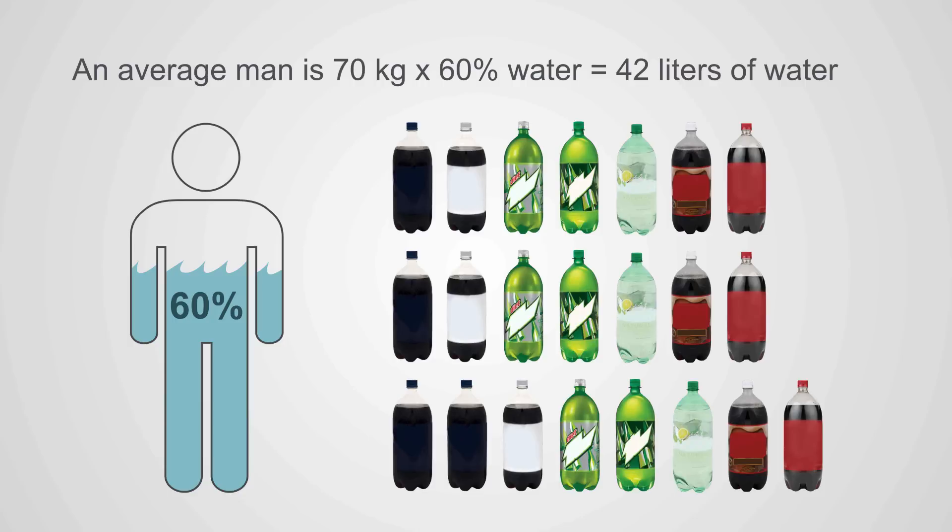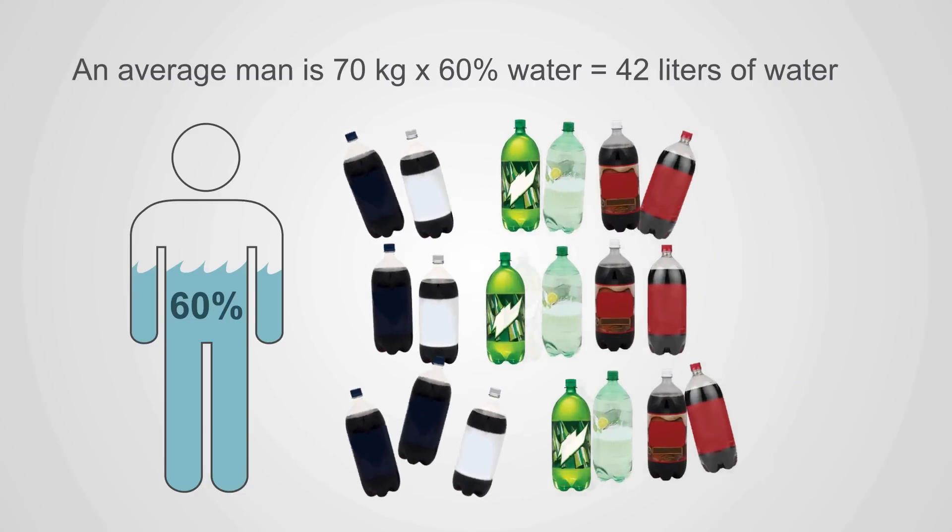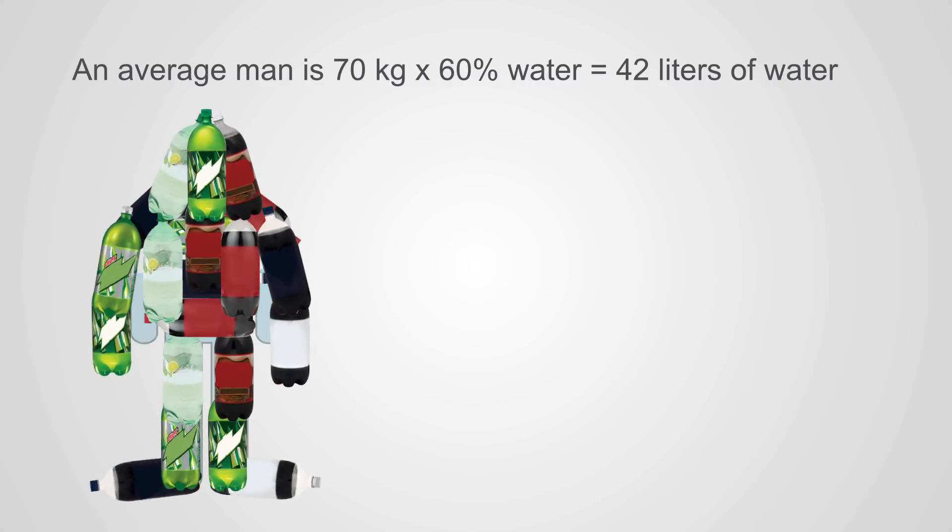The average man is 70 kilograms, 60% of which is water. So total body water is 42 liters. Try to wrap your mind around a human being having 21 2-liter bottles of fluid inside their body. It kind of bakes your noodle.